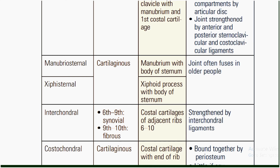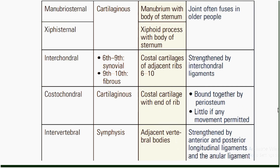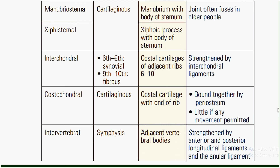The manubriosternal joint and xiphisternal joint are both cartilaginous joints. The manubrium with the body of the sternum forms the manubriosternal joint; the xiphoid process with the body of the sternum forms the xiphisternal joint, which often fuses in older people. Interchondral joints: sixth to ninth interchondral joints are synovial while ninth and tenth are fibrous joints formed between costal cartilages of adjacent ribs, strengthened by interchondral ligaments. Costochondral joints are cartilaginous joints between the costal cartilage and the end of the rib, with little if any movement permitted.